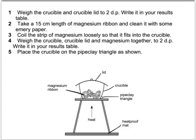This is a classic science experiment that most schools do. Essentially what you do is weigh the crucible and lid on an accurate set of scales, then take a piece of magnesium ribbon, clean it up so that it's good and shiny with no oxide coating on it, coil it up in the crucible and weigh it again.